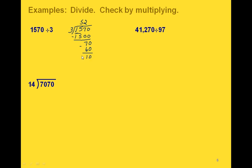Now we compare the 3 to the 1, but 3 is bigger than 1, so we compare the 3 to the 10. Well, 3 goes into 10 three times. Then 3 times 3 is 9, and if we subtract 10 minus 9 we get 1. So our answer is going to be 523 with a remainder of 1.